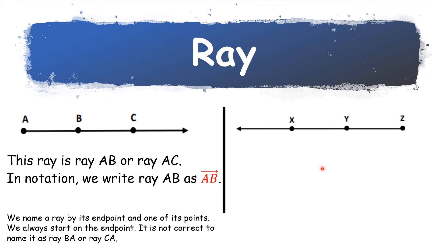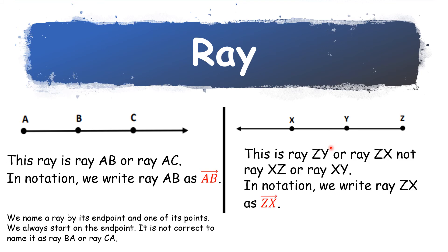Another example: what is the name of this ray — is it XZ, ZX, XY, or YX? The answer is Ray ZX or Ray ZY — start with the endpoint and go in the direction of the arrowhead.